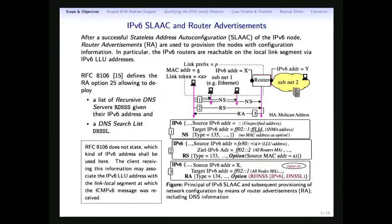IPv6 is a somewhat different beast from IPv4. The main idea of IPv6 is that everything is auto-configured. When a client comes online on the network, it asks for a prefix and performs stateless address auto-configuration — SLAAC. The client configures itself an IPv6 address, which initially is a link-local unicast address starting with FE80.